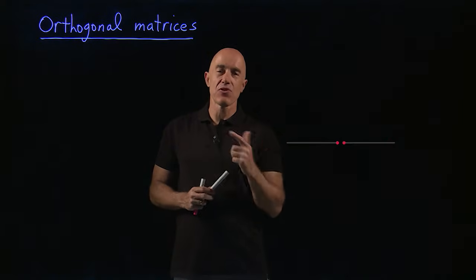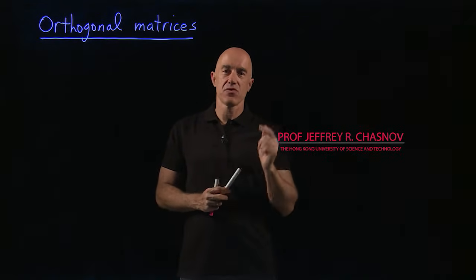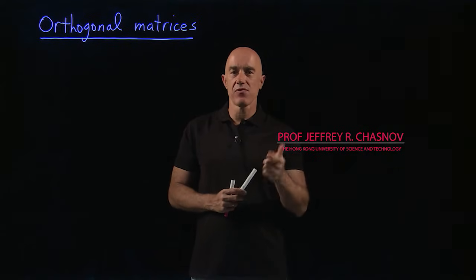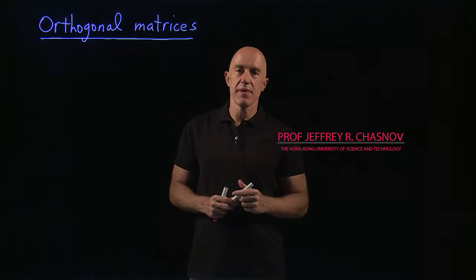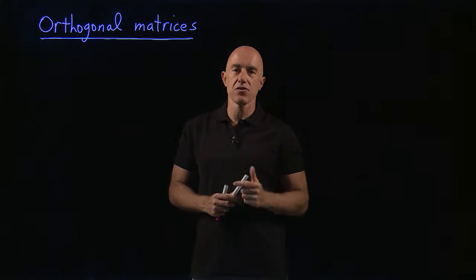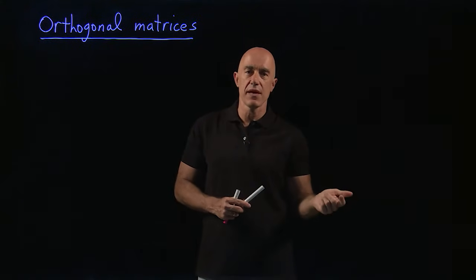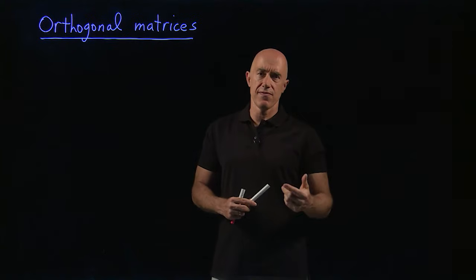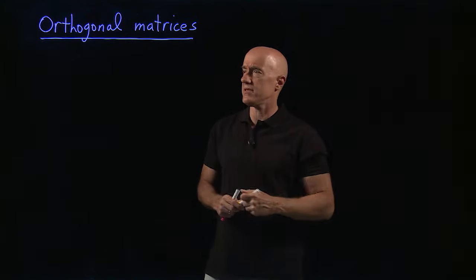So we've learned about transpose matrices and we've learned about inverse matrices. So there's another type of matrix called an orthogonal matrix. This is a special type of matrix that makes use of transposes and inverses.